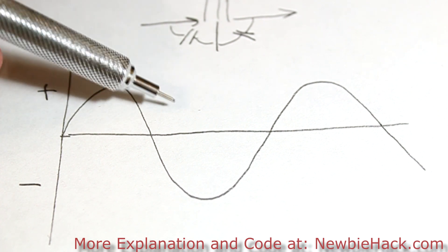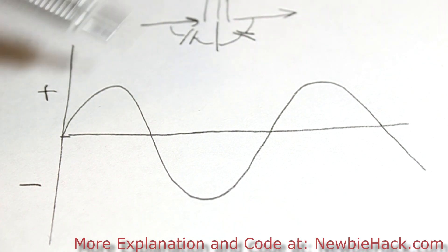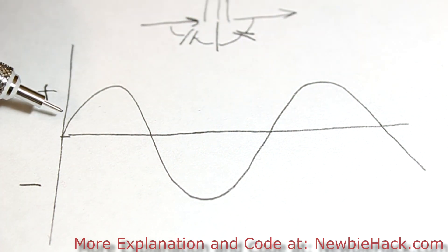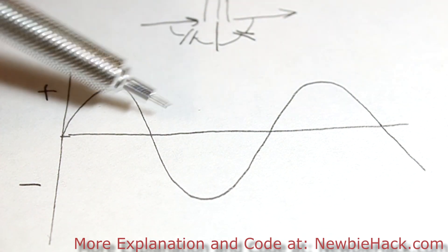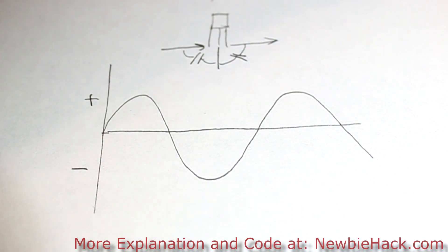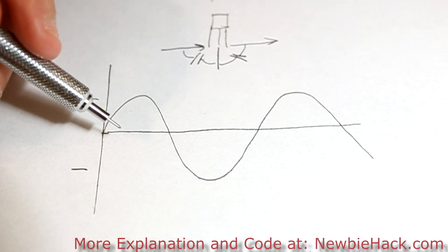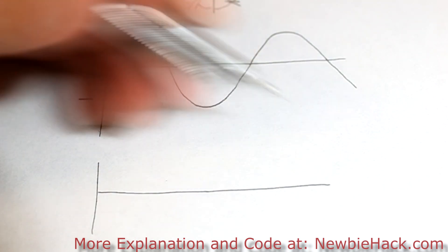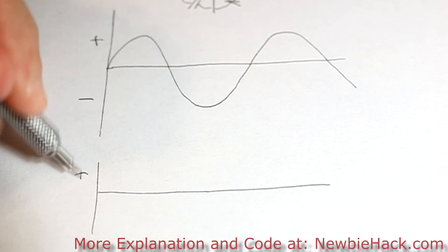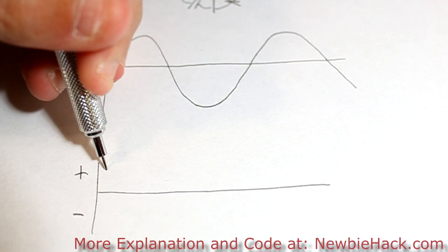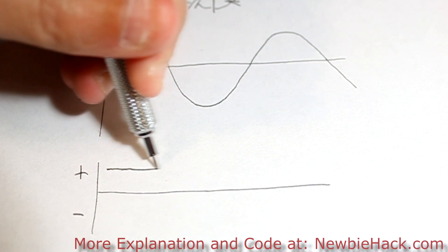It's 60 hertz, or 60 sine waves per second. And we obviously can't use this for DC — this is not direct current. Direct current would look like this: it would either be in the plus region or the minus region, and it would just be a straight line.